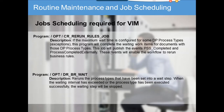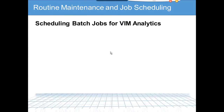Another program reruns processes that have been set into a wait step where the waiting interval has exceeded or the process type has been executed successfully. For example, if an invoice was assigned to a warehouse person and they went outside the VIM workflow to do the goods receipt directly, this program detects the GR is done and skips the wait step rather than waiting three days before escalating.